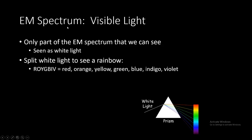Visible light is the only part of the electromagnetic spectrum that we can see. It's seen as white light, but it splits into the rainbow — ROYGBIV — which stands for red, orange, yellow, green, blue, indigo, and violet. When white light passes through a prism, it separates into all the colors of the rainbow, the same effect you see when it rains outside and a rainbow appears in the sky.